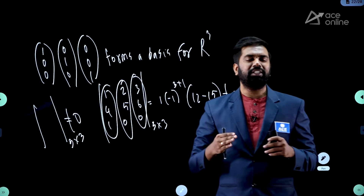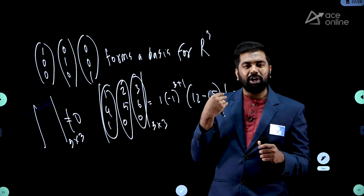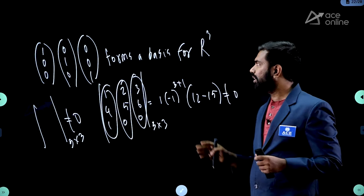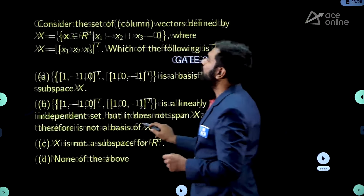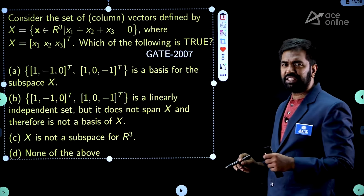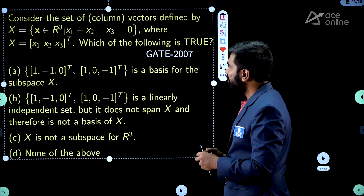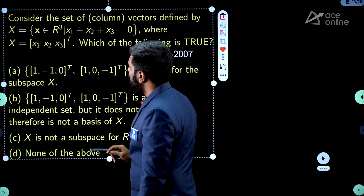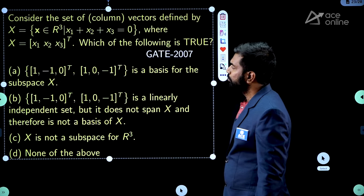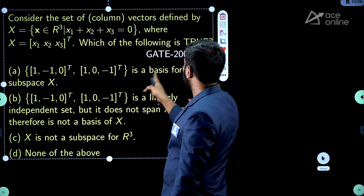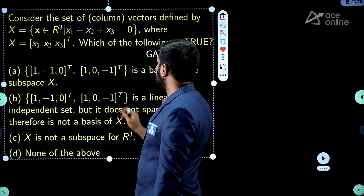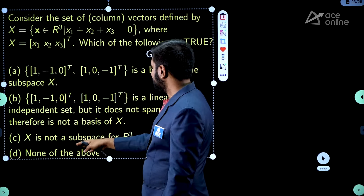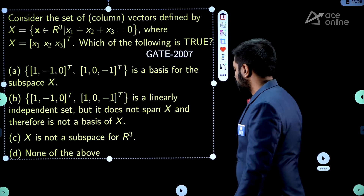The discussion so far was about R², R³, or Rⁿ, but it need not always be about Rⁿ. They might talk about some other set as well. Here is an old GATE problem from computer science, from around 2007: Consider the set of vectors defined by x, where x belongs to R³ such that x₁ + x₂ + x₃ = 0, where x = (x₁, x₂, x₃)ᵀ. Which of the following is true?